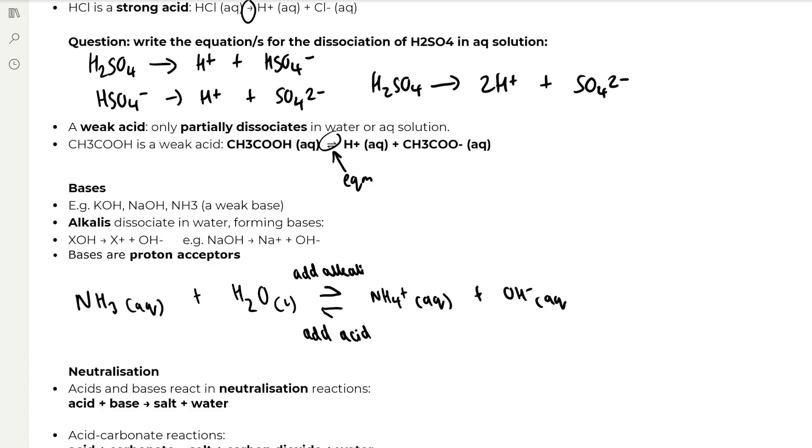Bases are defined as proton acceptors. You can see in this equation that when we put ammonia in water, it reacts with water forming NH4+ and OH- ions. So it's gone from NH3 to NH4+, that's a gain of one proton, so that's why bases are defined as proton acceptors. It's also an equilibrium because it's a weak base. So if we add more alkali, then the equilibrium will shift to the right and will form more hydroxide, then the equilibrium will shift in the opposite direction to the left, forming more ammonia.